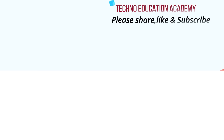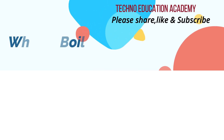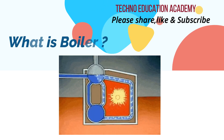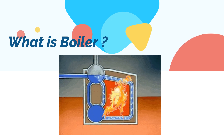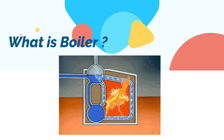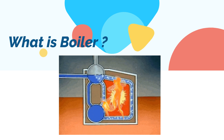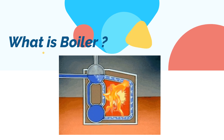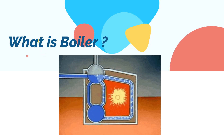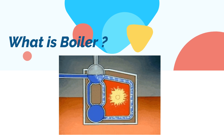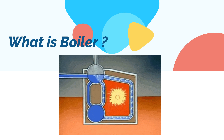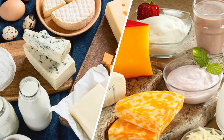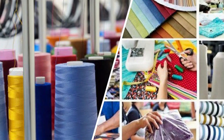First of all, what is a boiler? A boiler is a closed vessel made of steel in which heat is transferred to water by combustion of fuel, which vaporizes the water and converts it into steam at desired pressure and temperature. This steam is utilized to rotate the turbine, or we can say prime mover, so it will produce power.